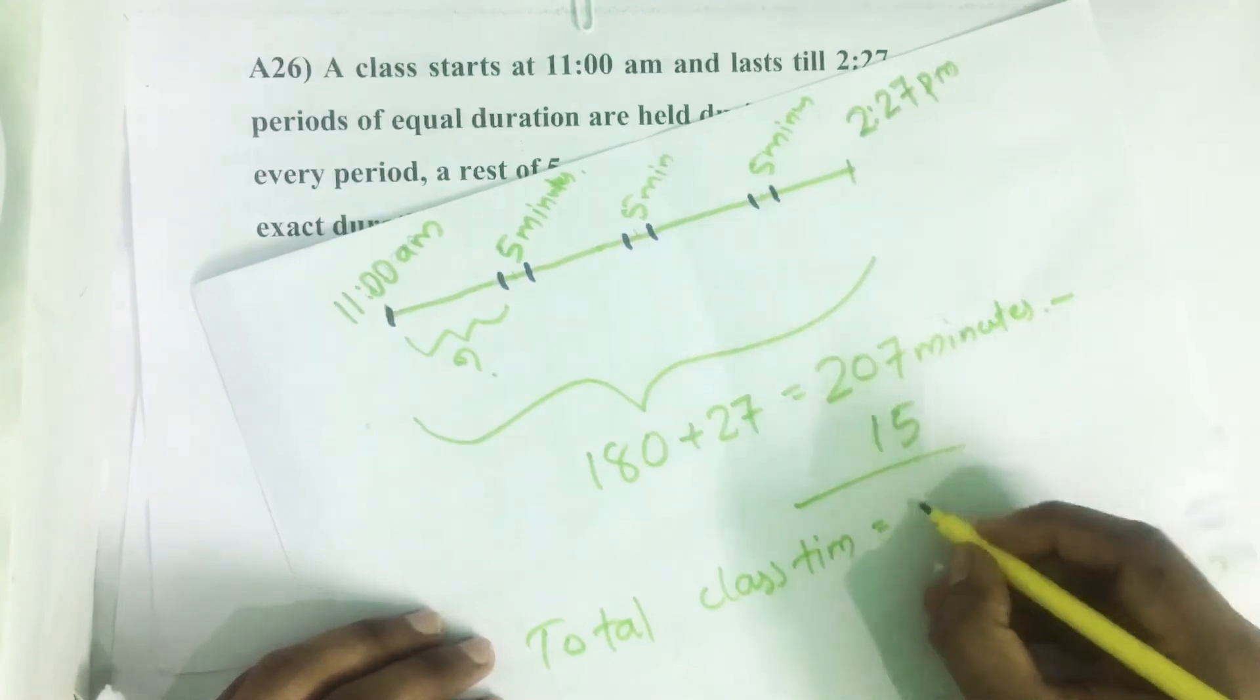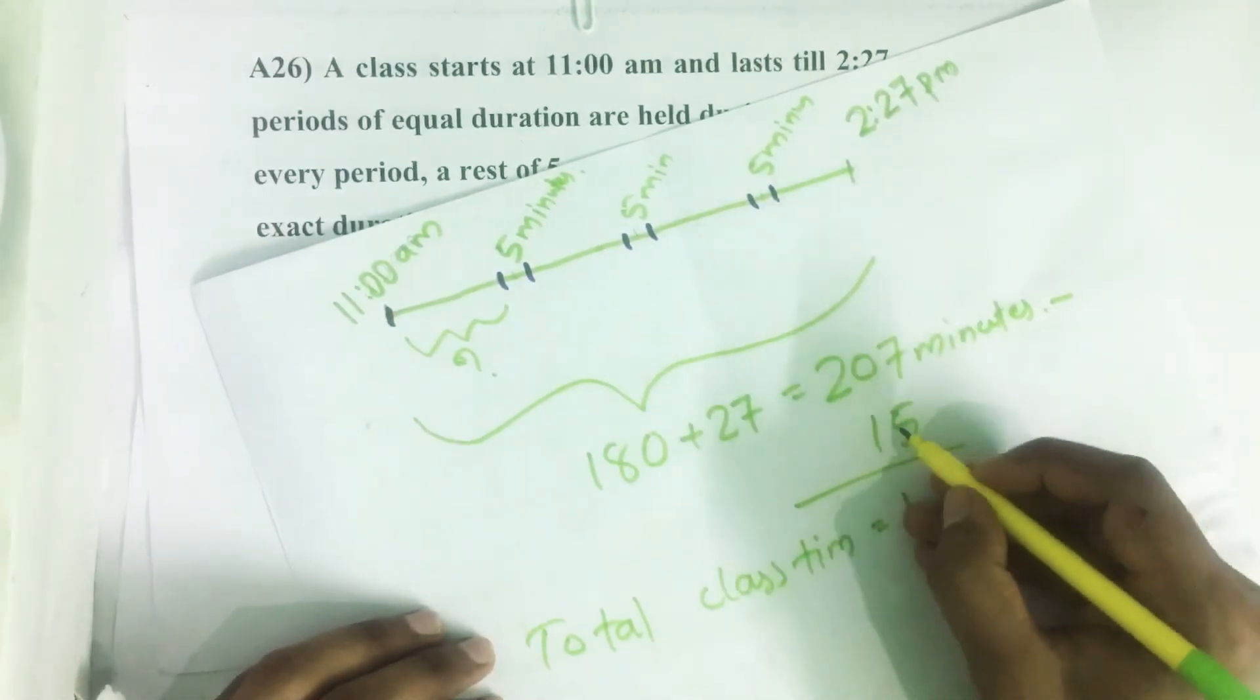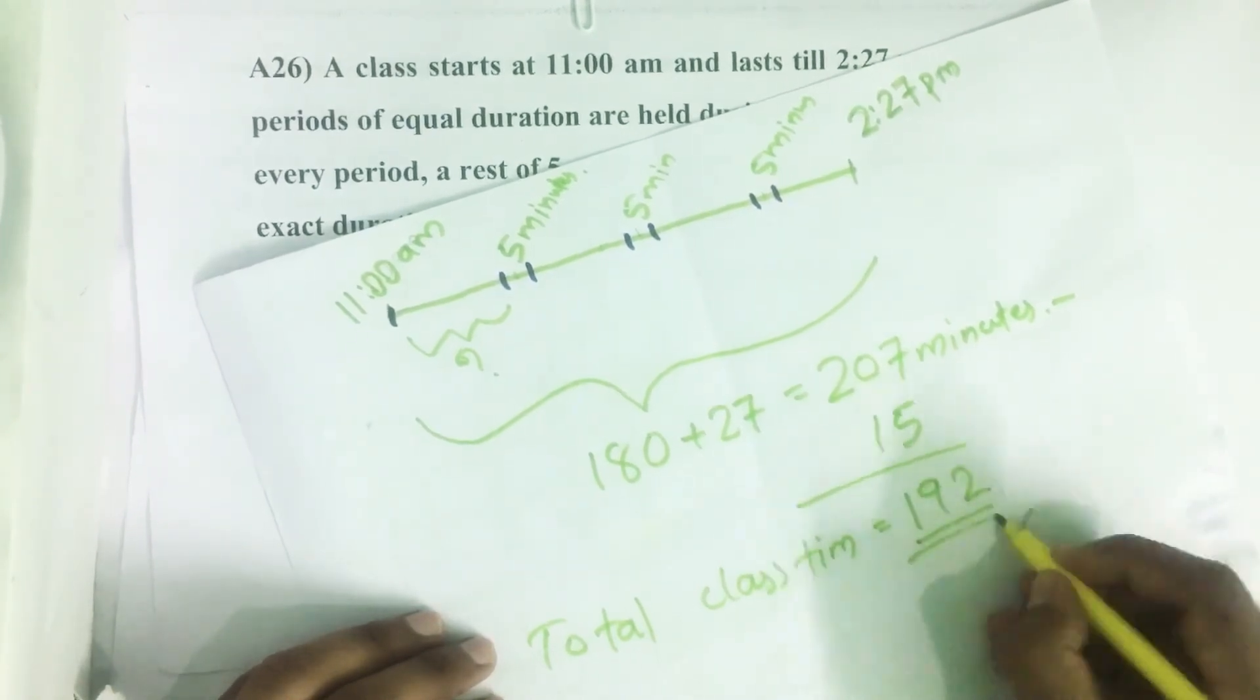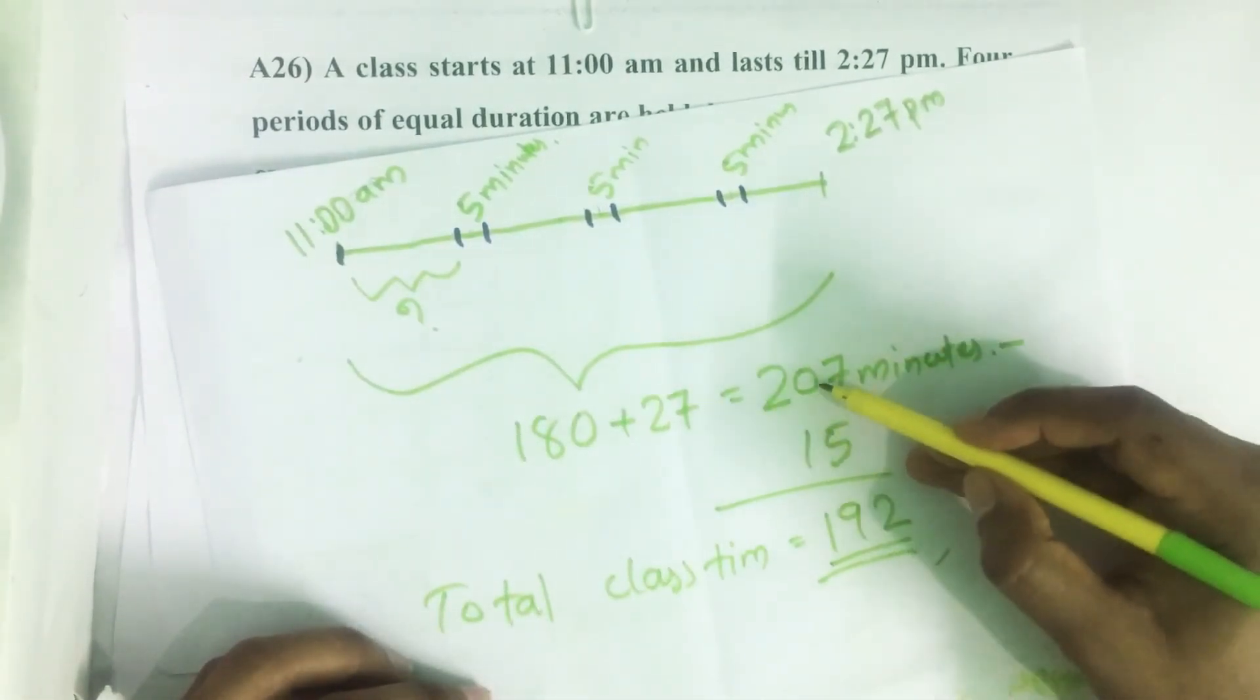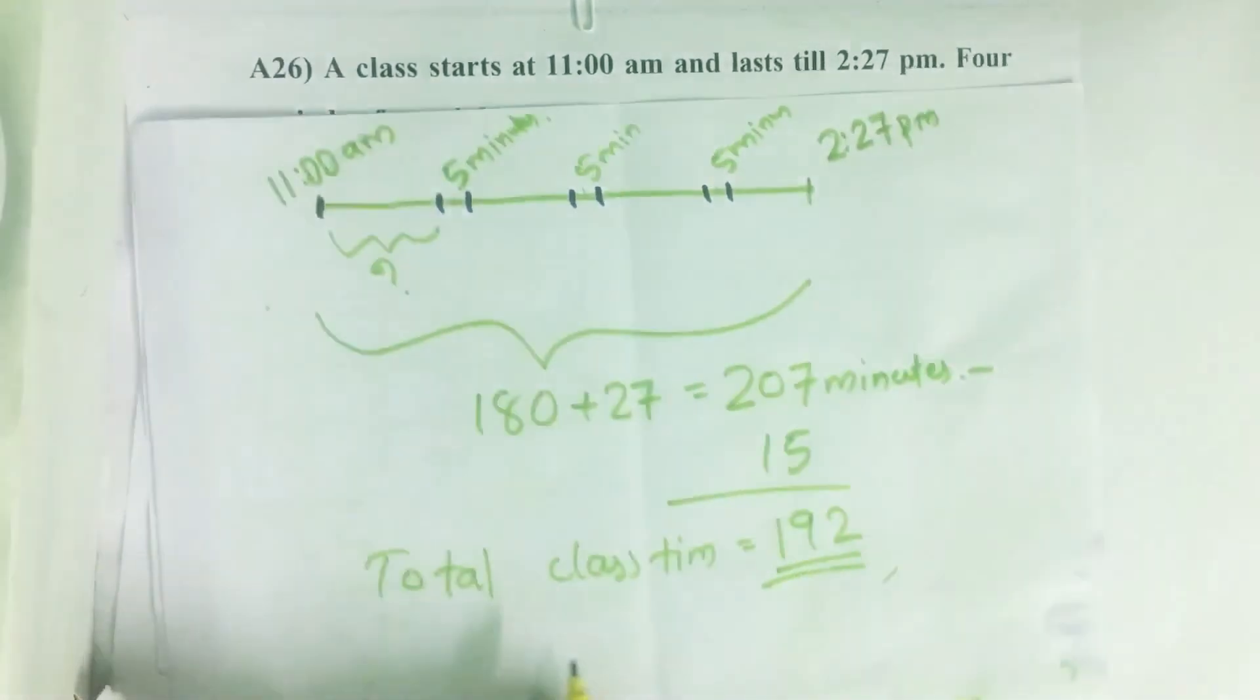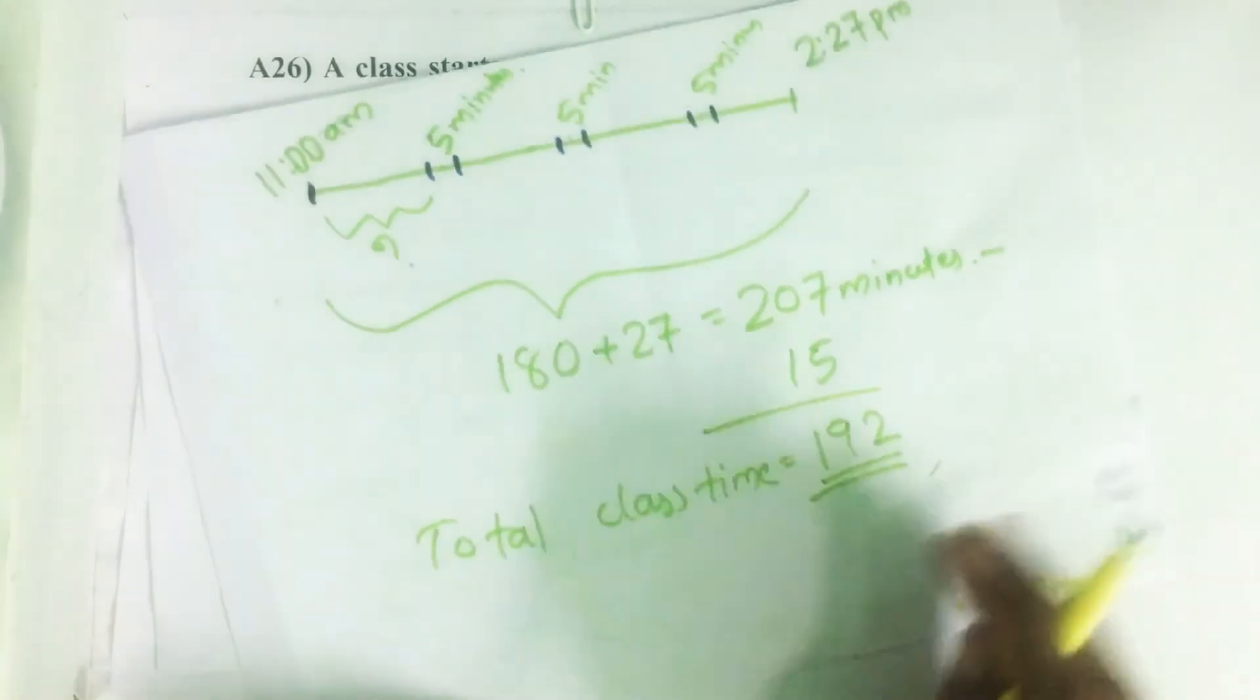207 minus 15, we get 192. 2 plus 5 is 7, then 9 plus 1 is 10, carry 1, 1 plus 1 is 2. So we get total class time equal to 192 minutes.